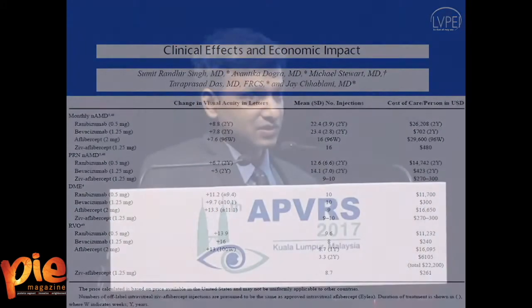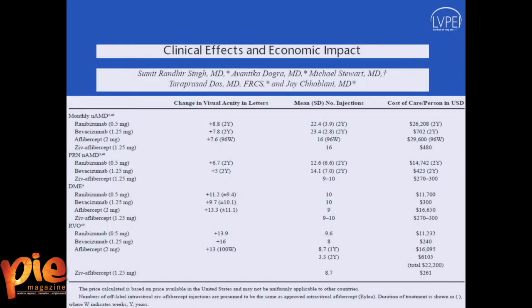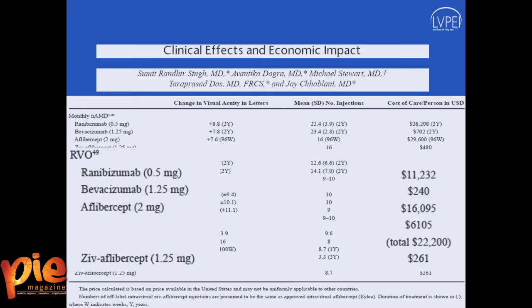Dr. Jay Chhablani has also published the cost-effectiveness in the Asia-Pacific Journal of Ophthalmology a couple of months ago. Looking at the vein occlusion data, it is quite similar to Avastin in cost per year in US dollars — about $240 for Avastin and $260 for Ziv-Aflibercept at the 1.25 mg dose — compared to the many hundreds of times more for Aflibercept or Ranibizumab.